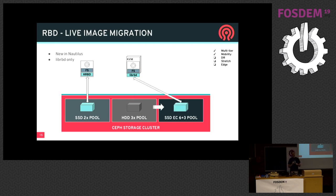In Nautilus, we also have a new feature called RBD Live Migration that allows an in-use image to be migrated live. For example, if you have a VM running and consuming a block device, you can do a live migration of that RBD image from one tier of storage to another without interrupting or restarting the VM. You've always been able to live migrate the VM itself, but now you can also move the storage to a new performance tier while the VM is still running. That's new in Nautilus this month.